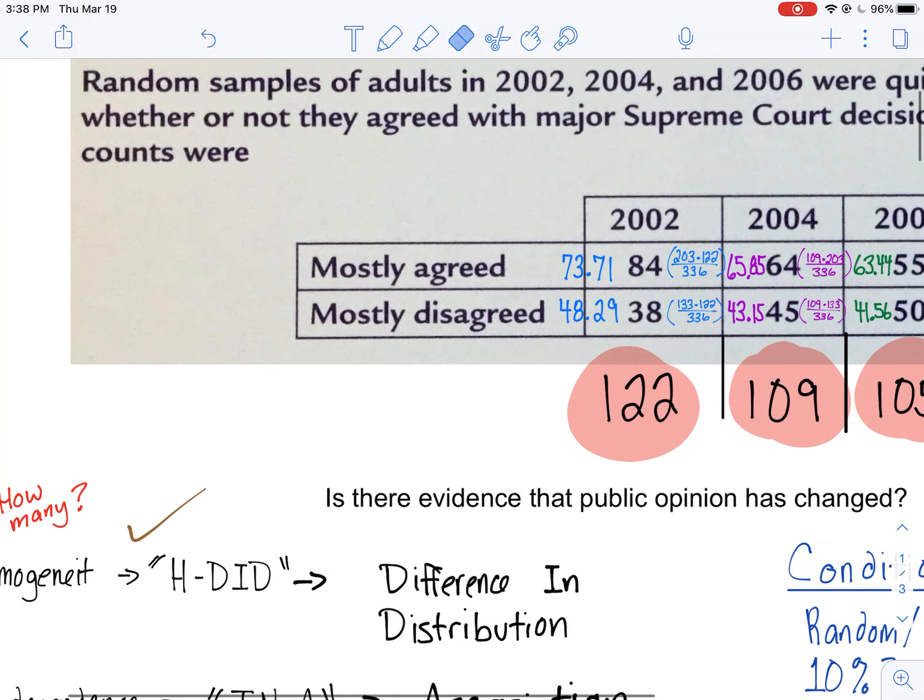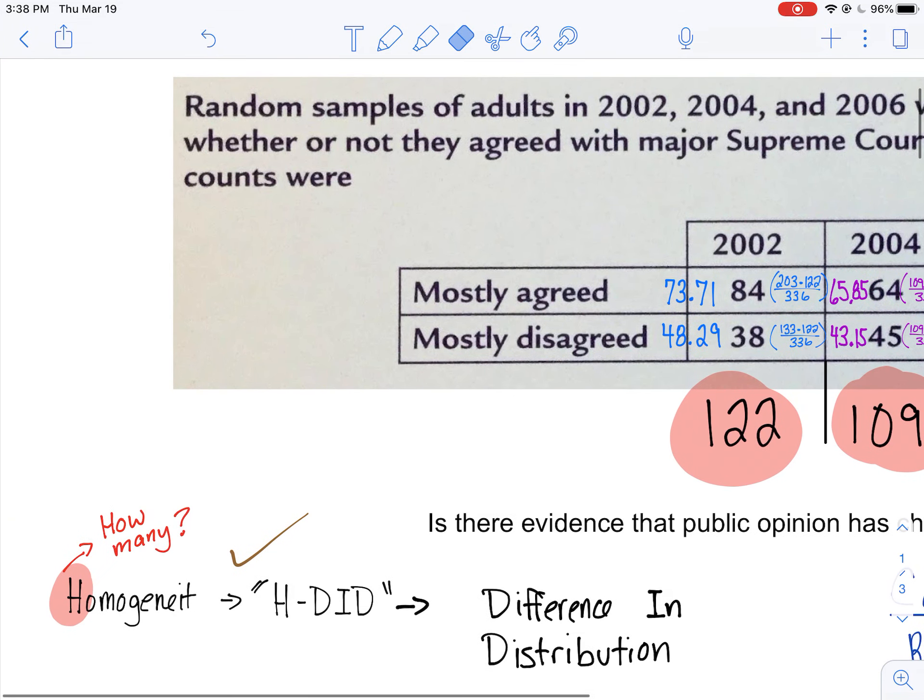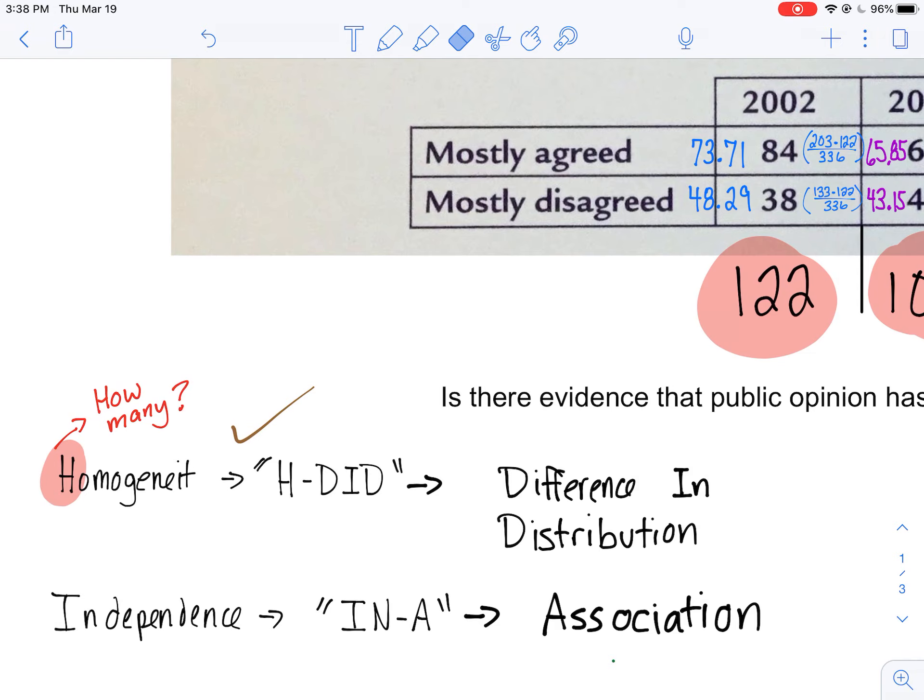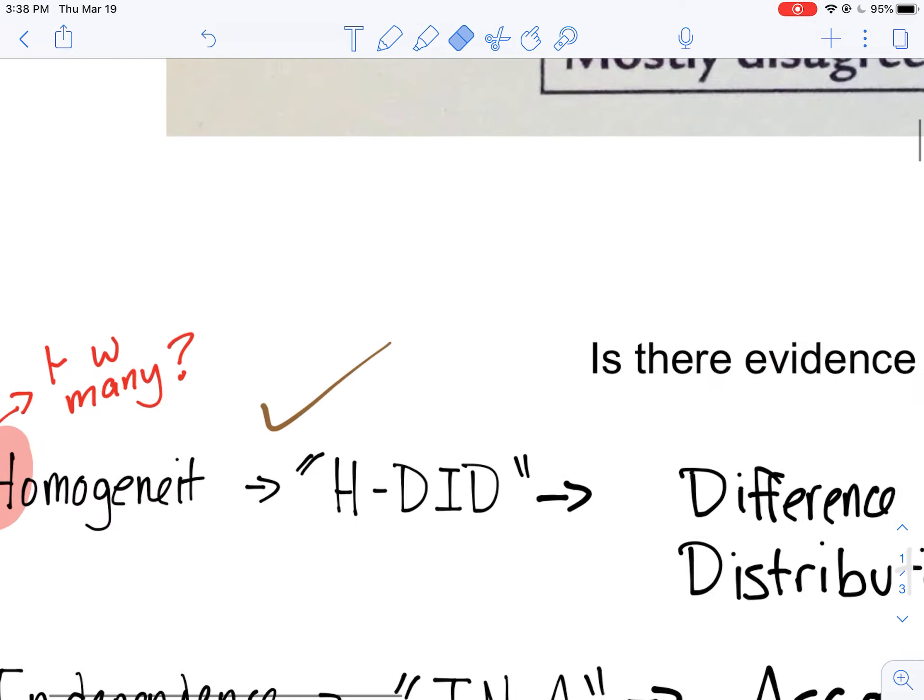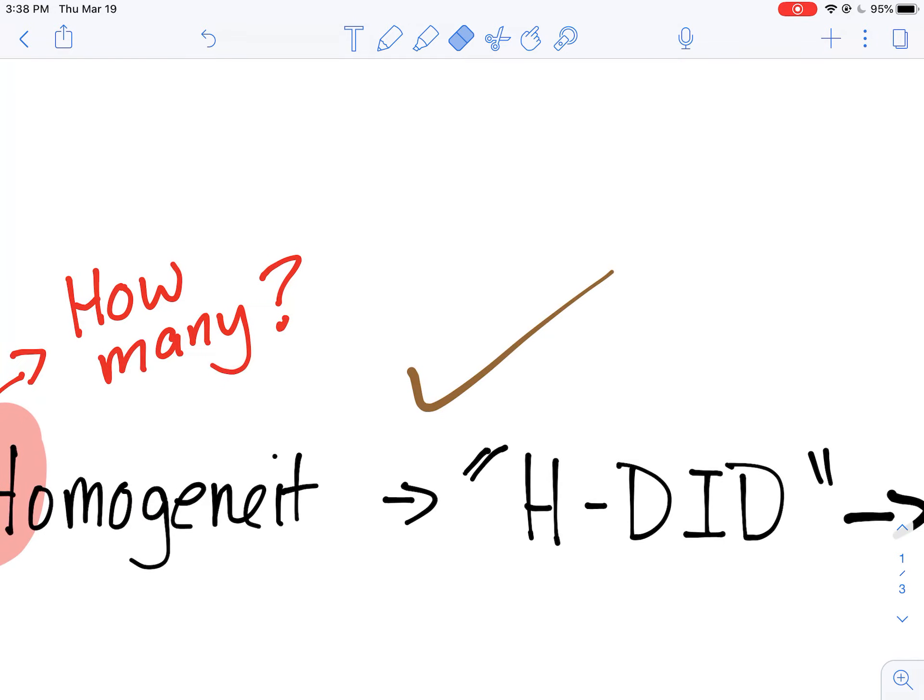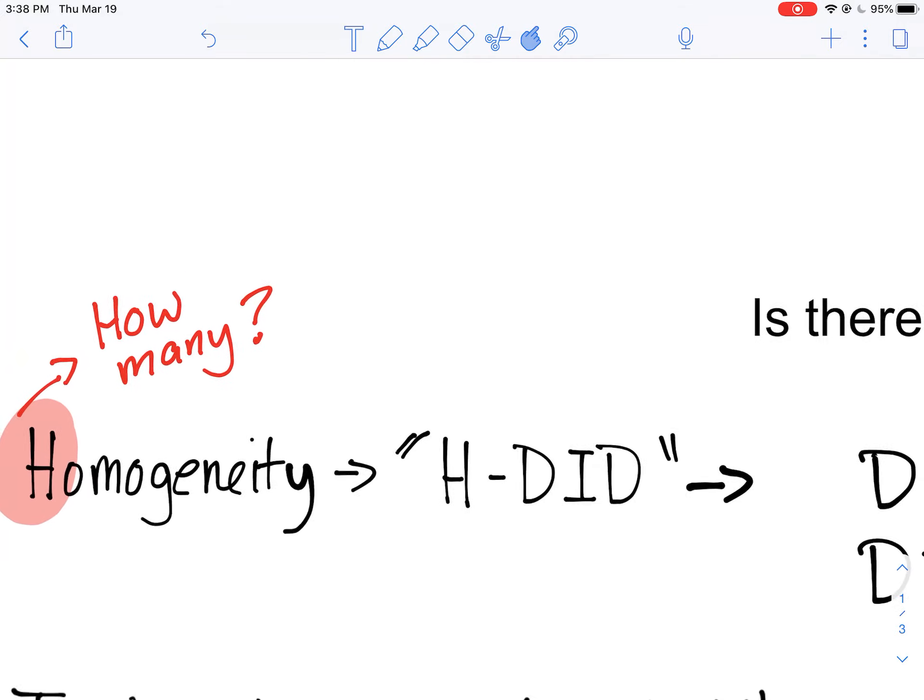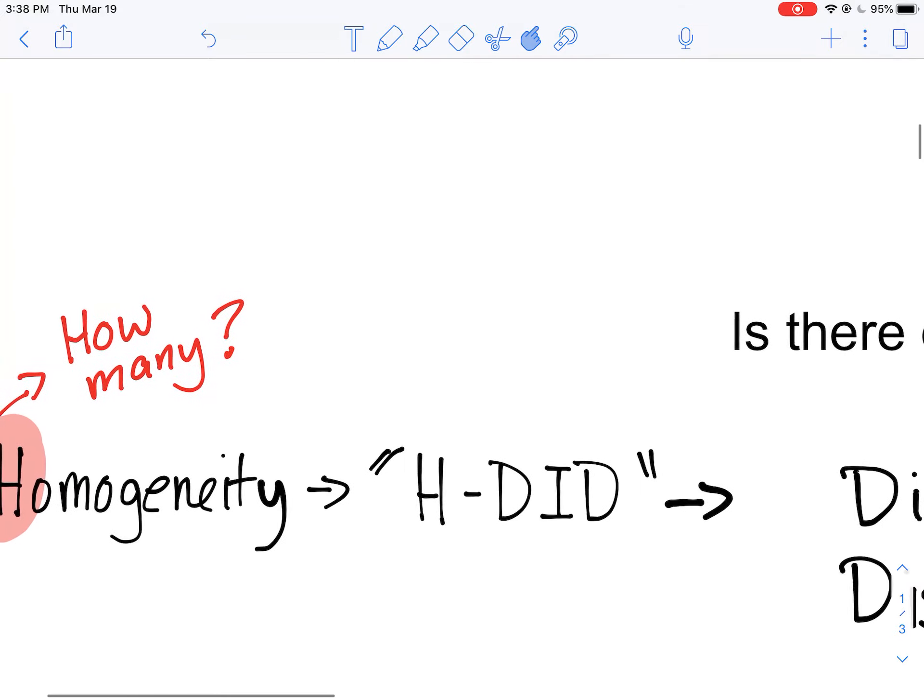Now first of all, I want to figure out whether I'm running a chi-square test for homogeneity or independence. You'll notice that I wrote down a few acronyms here that kind of help me remember these. I struggled a little bit when I first started doing chi-square. For homogeneity, I remember H-DID.